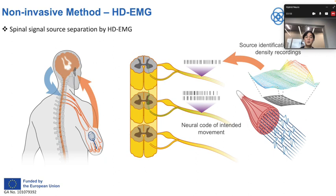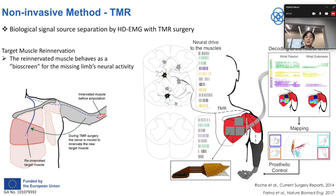This is a highlight of what we are working on in our lab. The potential of using high-density EMG is that by using a source separation technique, we can back-calculate the source signals coming from the spinal cord. As the tissue surrounding the muscles behaves as a low-pass filter, the information we can get from global EMG is not reliable enough. Getting the neural code by a non-invasive method opens a pathway to next-generation assistive device control. Also, if we combine the source separation method with TMR surgery, we can get a higher amount of information about the missing limb's neural activity, providing more reliable and higher-dimensional motor intention for limb loss patients.